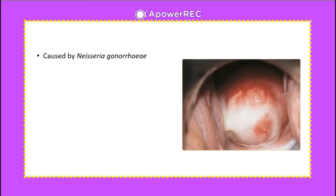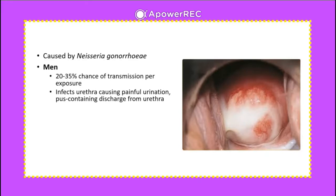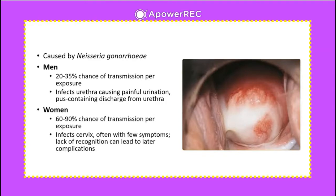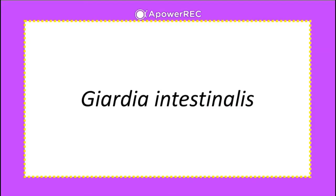Gonorrhea is caused by the bacterium Neisseria gonorrhoeae. In men there is about a 20–35% chance of transmission per exposure, infecting the urethra and causing painful urination and pus-containing discharge. In women there is a higher 60–90% chance of transmission per exposure; it can infect the cervix, often with few symptoms, and lack of recognition can lead to later complications.